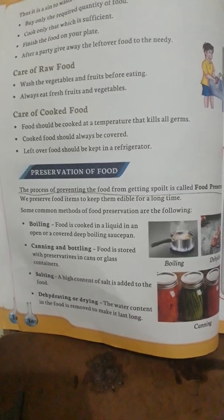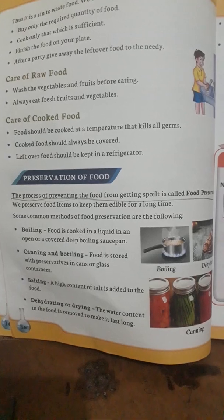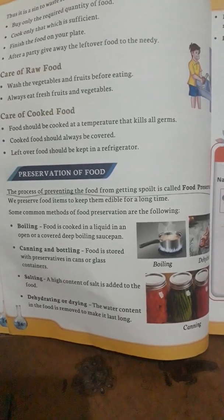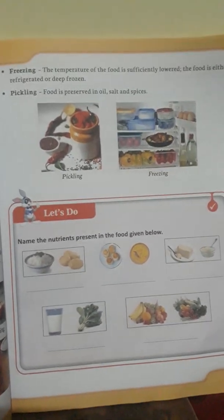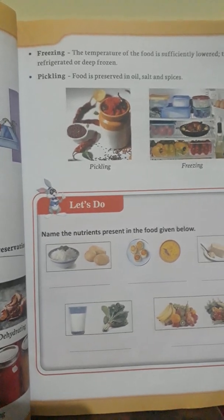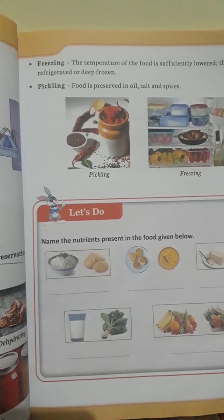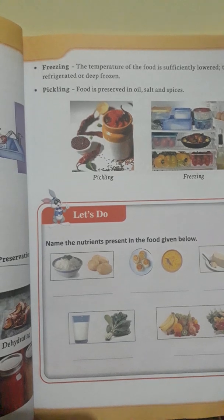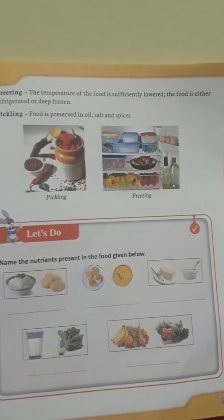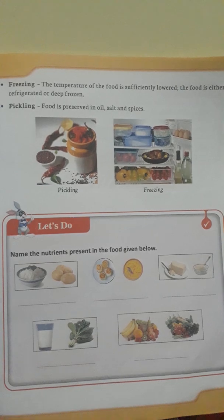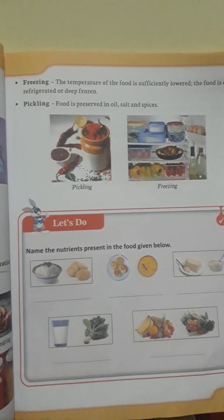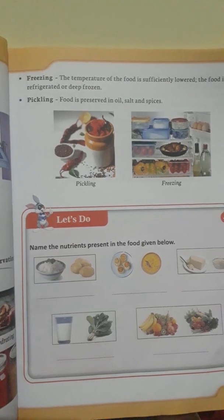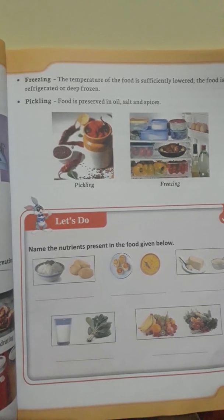Coming to the fifth method, which is freezing — freezing food to below zero degrees slows down the bacterial growth rate. Food is either refrigerated or deep frozen. The sixth method is pickling, where food is preserved in oil, salt, and spices.